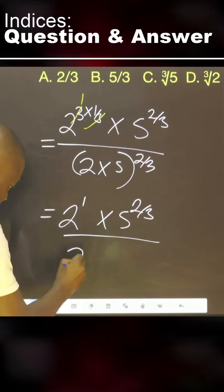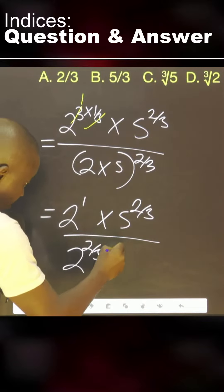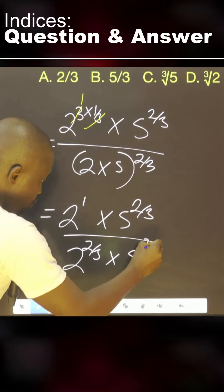What about this? This simply means 2 over 3 multiplied by 5, 2 over 3.